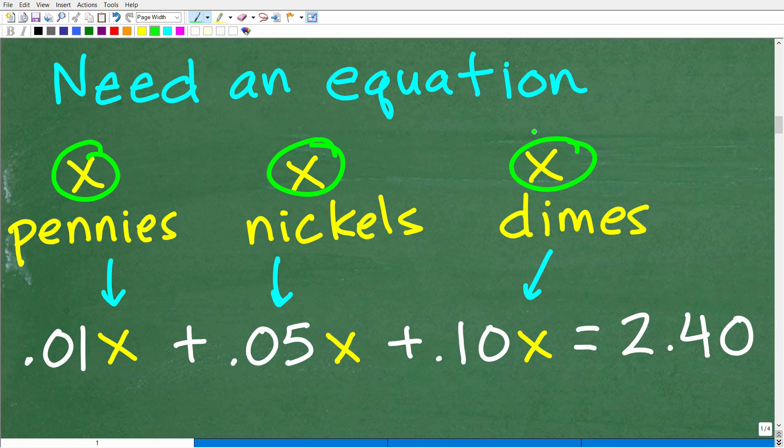One tip here: anytime you're dealing with a money word problem in mathematics, you need to express your coins as decimals. Pennies are going to be 0.01, a nickel will be 0.05, and dimes will be 0.10. If we had quarters, that would be 0.25, and a dollar will be 1. So 1.10 is $1.10. We're dealing with $2.40, which is $2 and then 0.40 is $0.40.